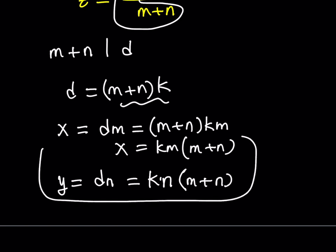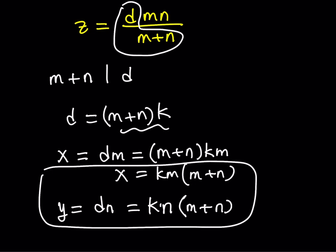So now we got the values for x and y in terms of m and n and k. But we didn't do the same thing for z because notice that z is written in terms of m, n and d. But we want to get rid of d because d is just the greatest common divisor.